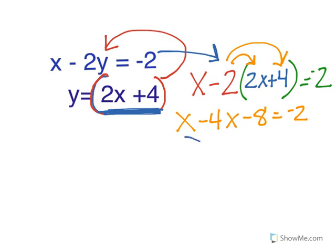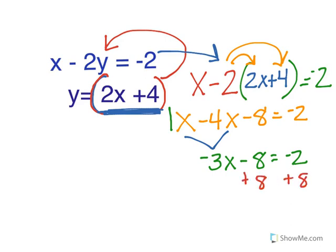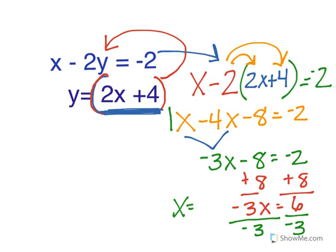Then you can combine like terms — the x's are alike so you can combine those. There's really a 1 in front of this x, so it's 1 minus 4x, which gives you negative 3x minus 8 equals negative 2. You want to get x by itself, so add 8 to both sides. You get negative 3x equals 6. To isolate x, divide by negative 3 on both sides, and you get x equals negative 2.